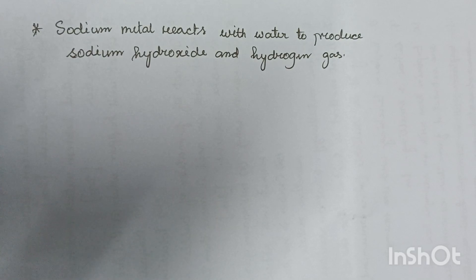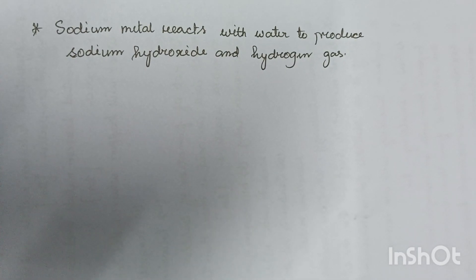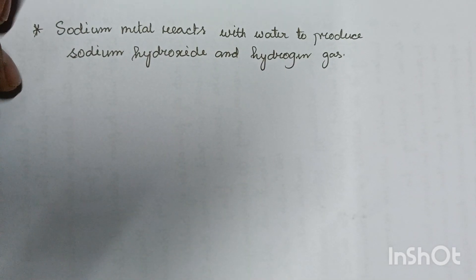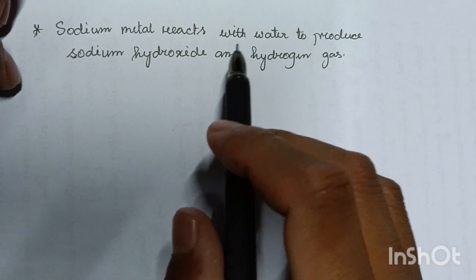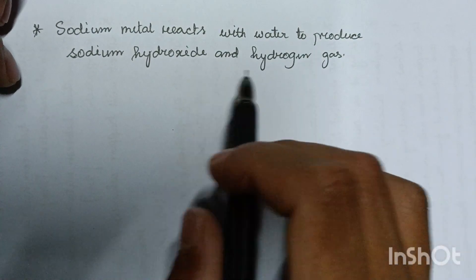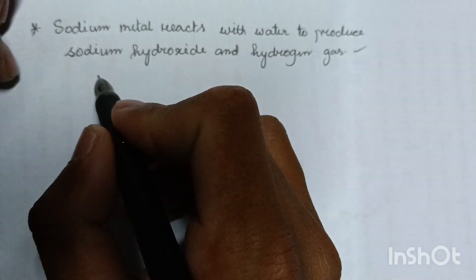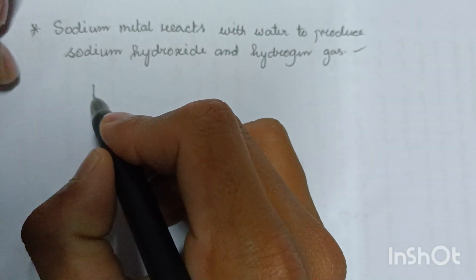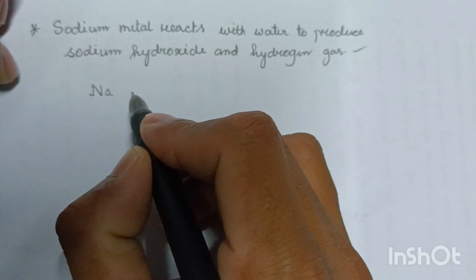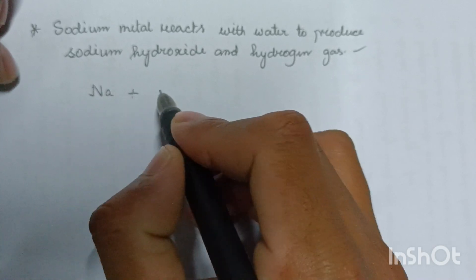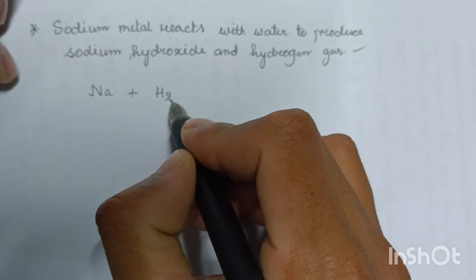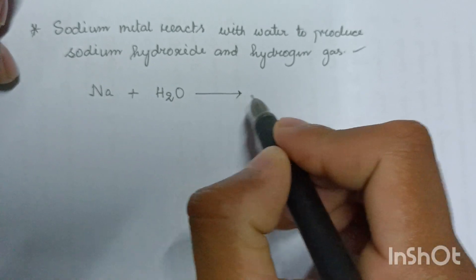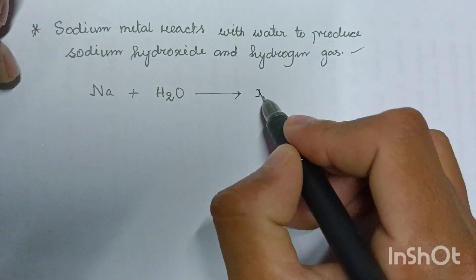This is the equation of sodium metal reacting with water, producing sodium hydroxide. This is the equation of sodium hydroxide.